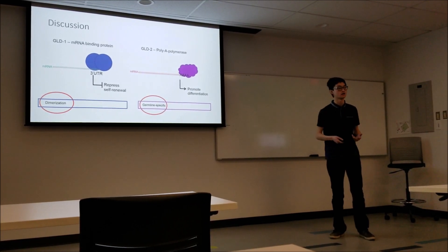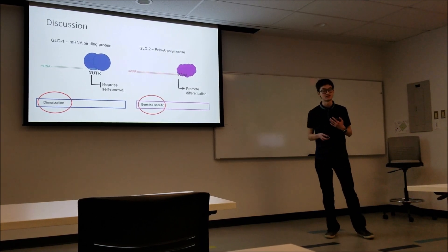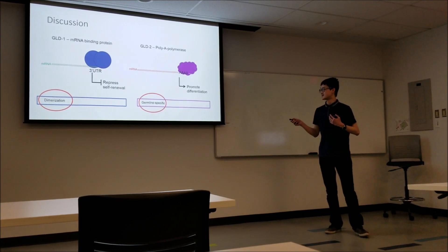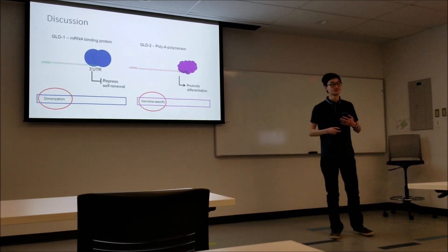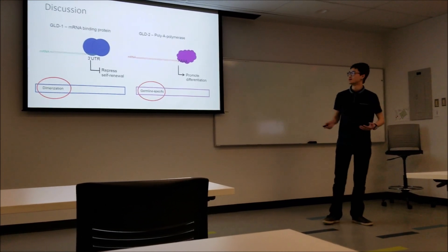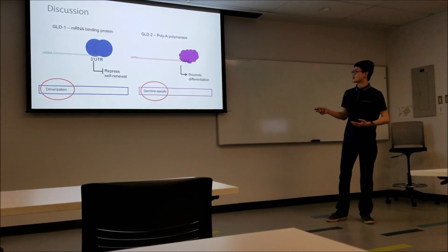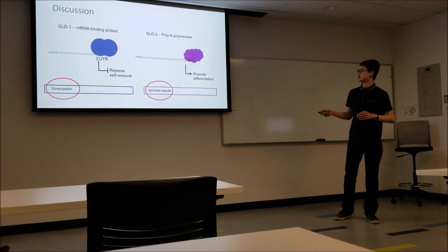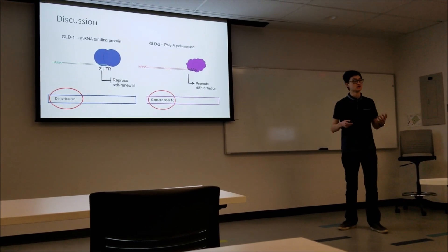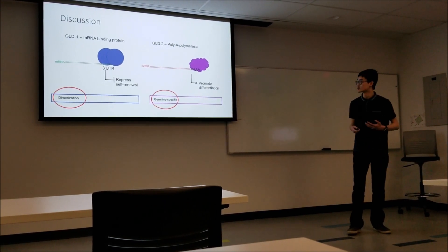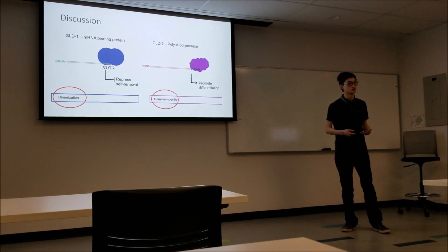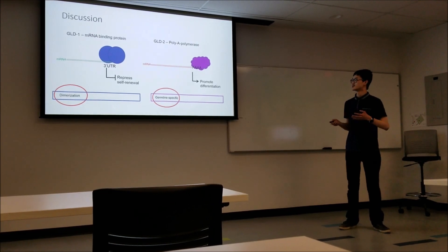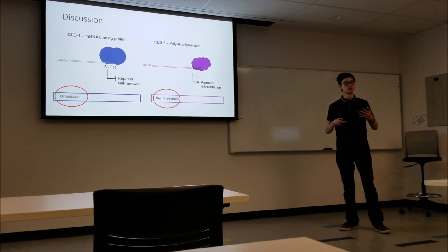And GLD2, so GLD2 is a poly-A polymerase. This happens to be my personal favorite polymerase because I also like it when I get A's added to my transcript. But it gets A's added and it polyadenylates transcripts that are important for differentiation. So it also promotes differentiation that way. There are actually many different isoforms of GLD2 in the worm that we don't need to worry about, but for this project it's interesting that GLP1 seems to be interacting with the germline-specific region. This isoform of GLD2 is only found in the germline, so that makes it seem like it could be a germline-specific effect.